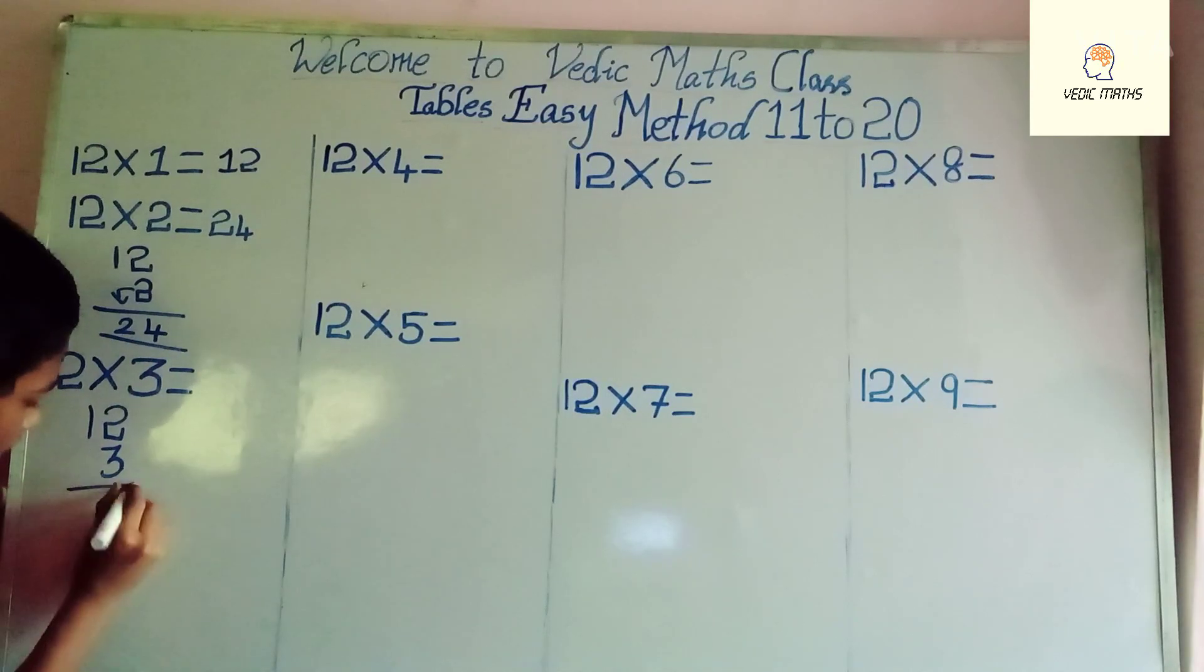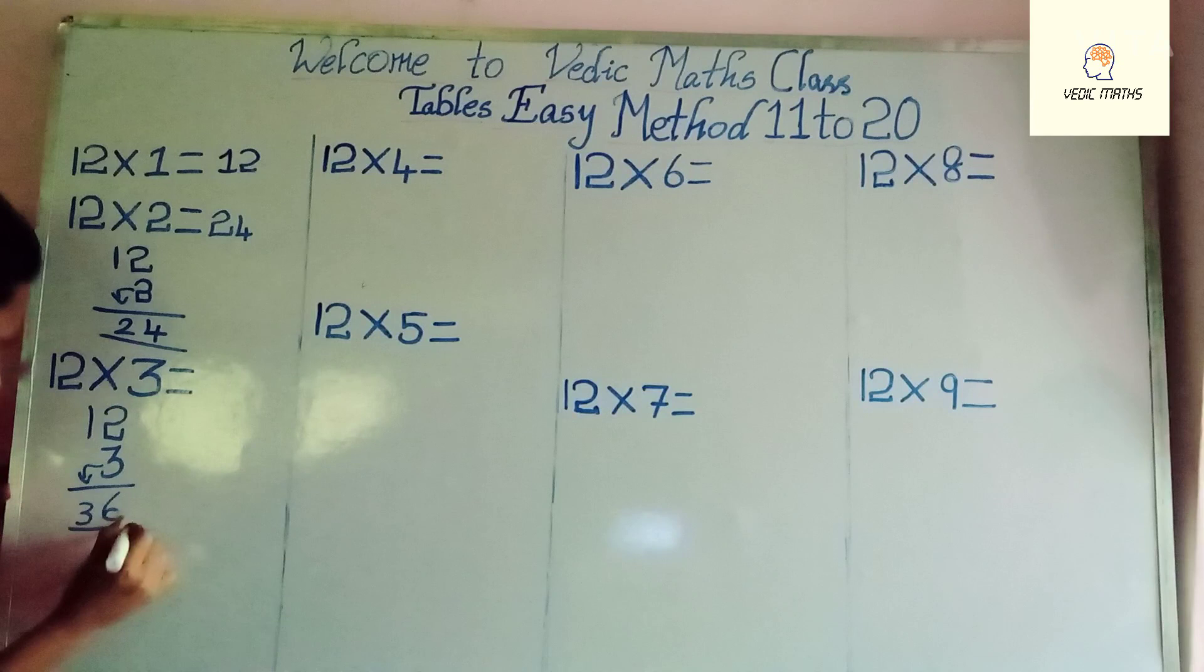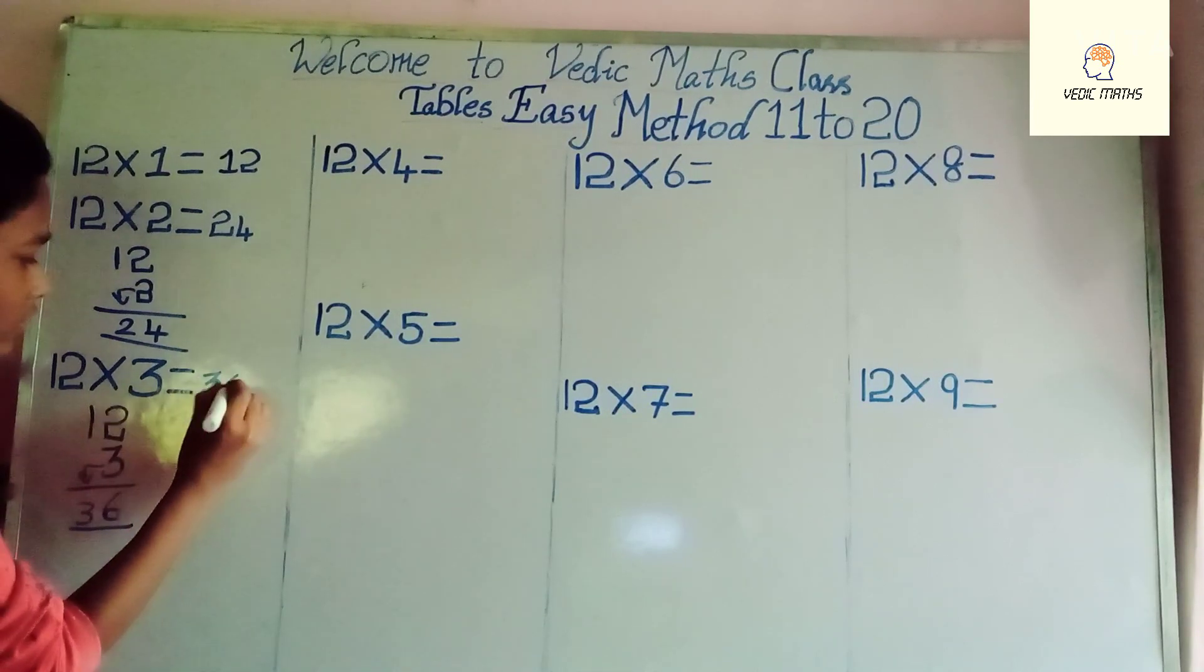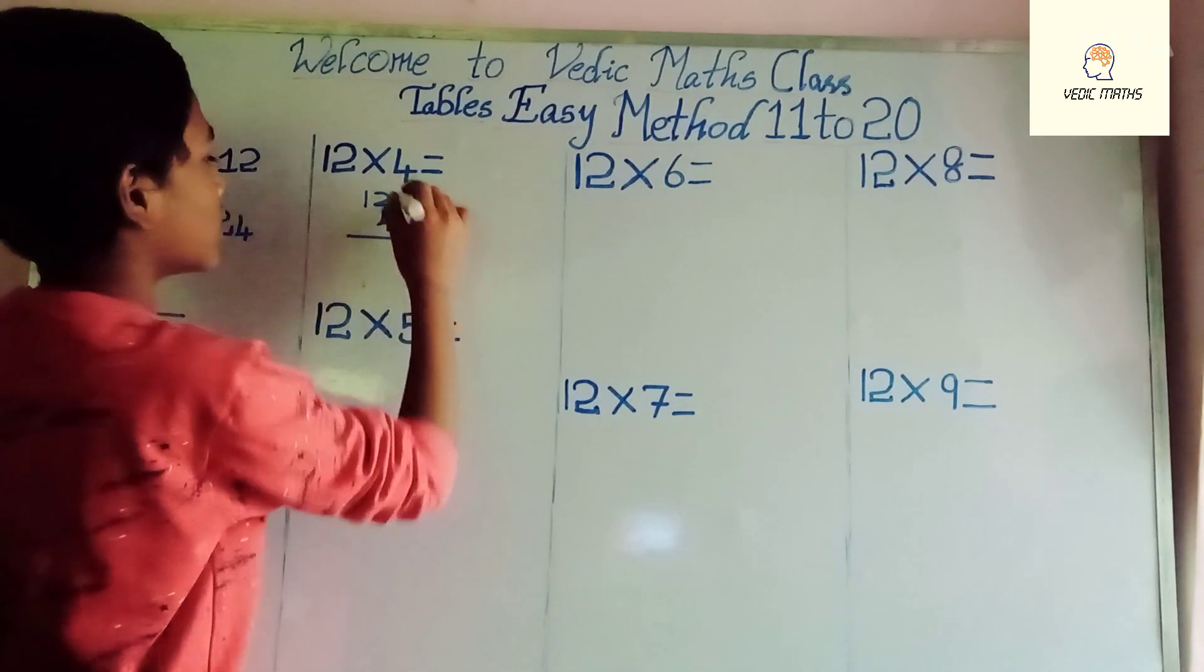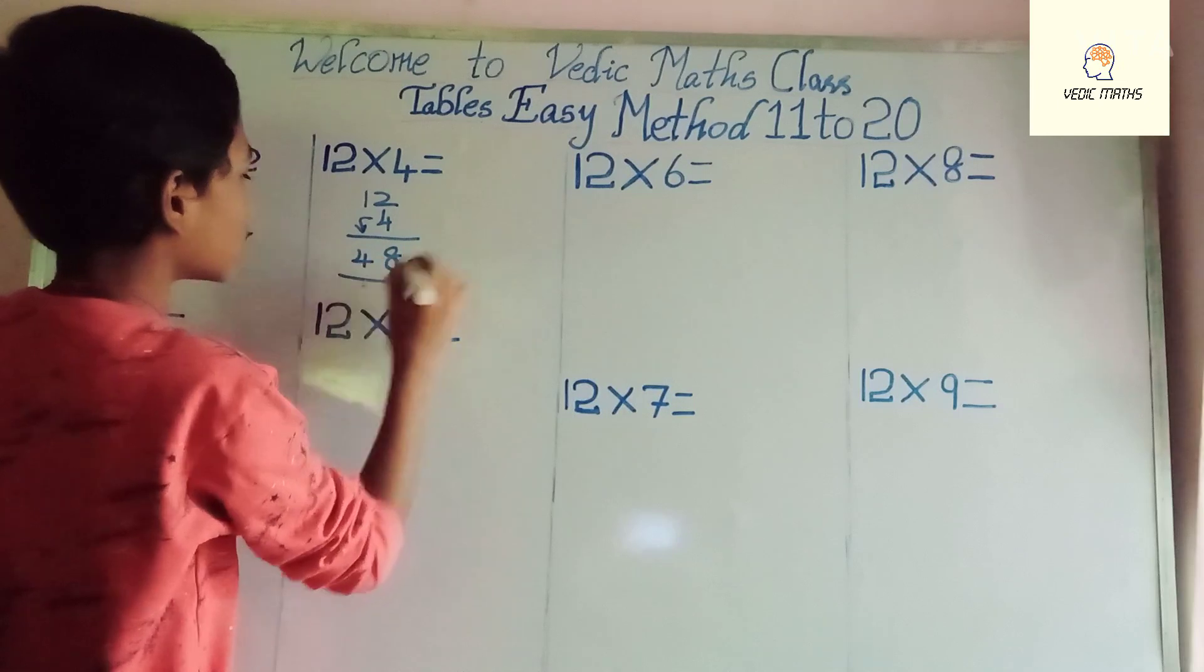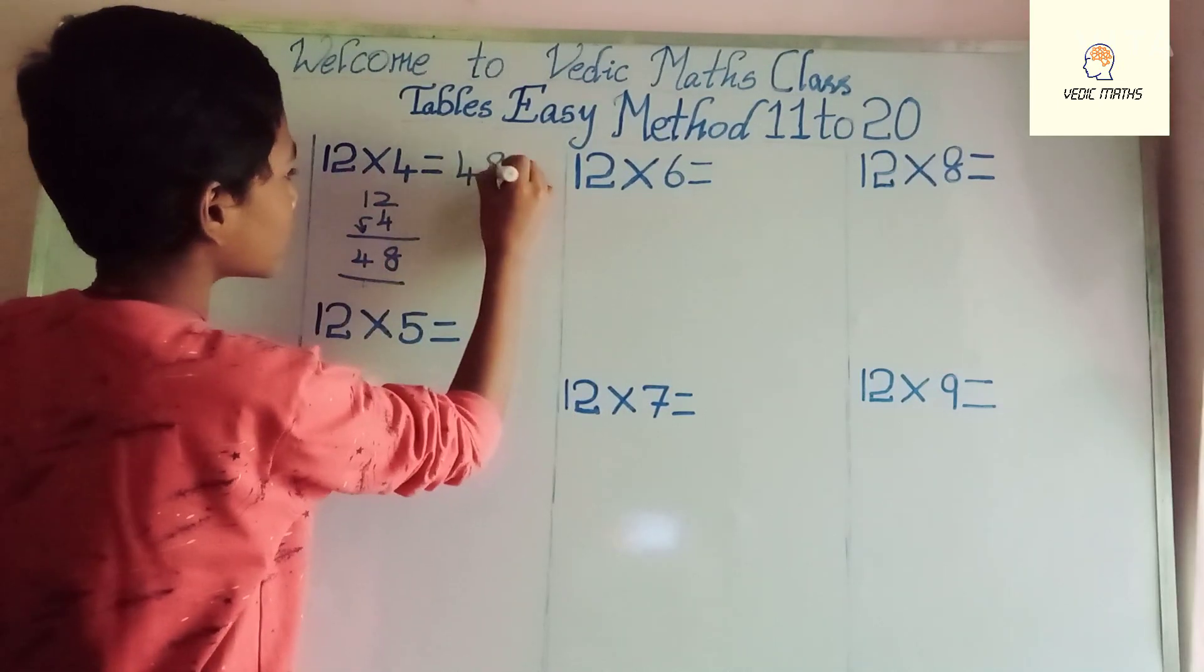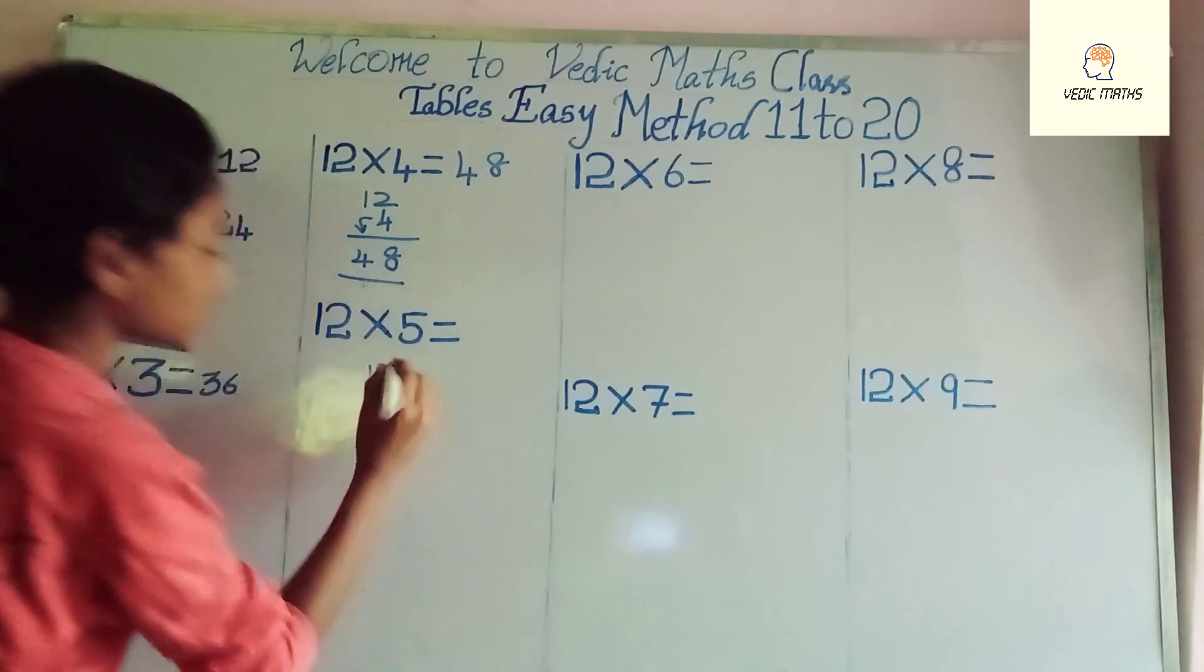And 12 into 4: 4 2's are 8, write the multiplier 4 here, that's 48. And 12 into 5, that's 5 2's are 10.